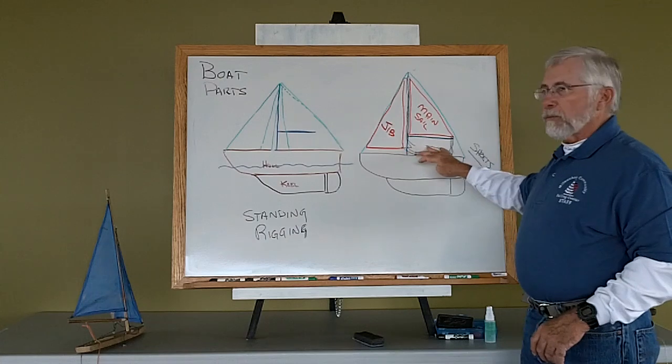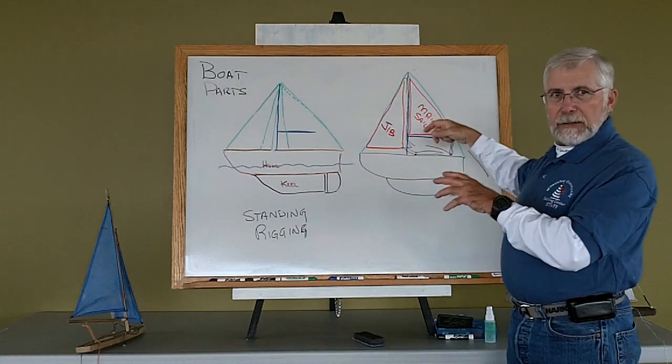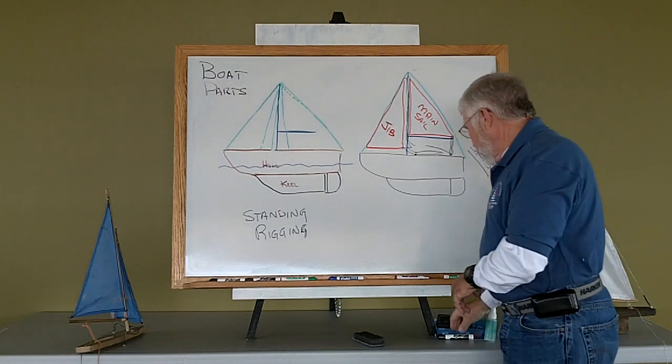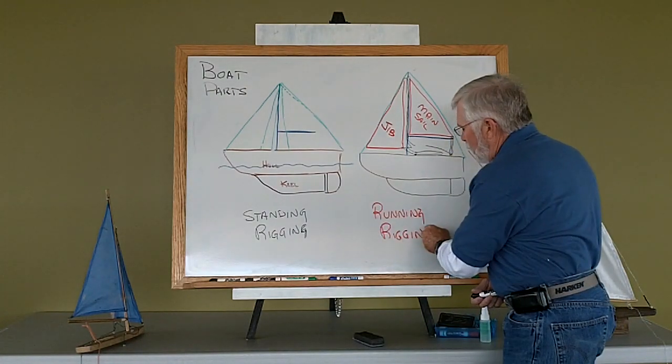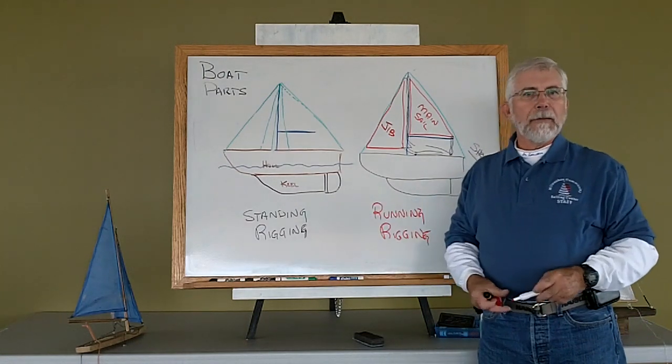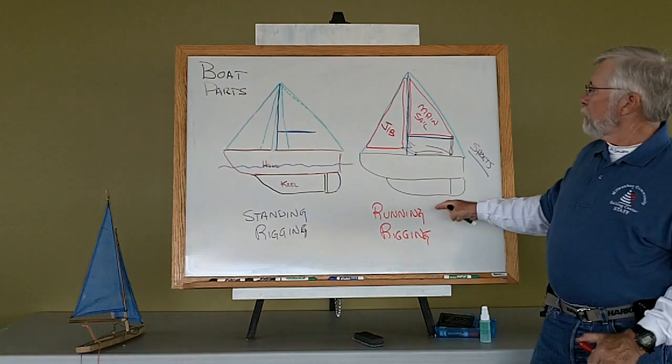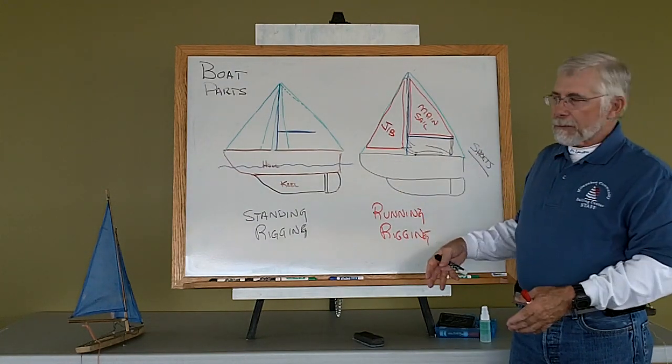The lines that we use to raise the sails and control the sails, we refer to as running rigging. So I have standing rigging that's used to hold my mast up. And then I have running rigging, which is used to control the movement of the sails.